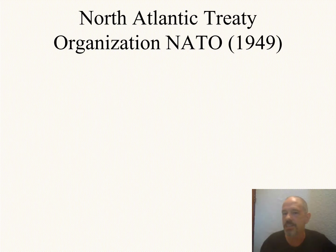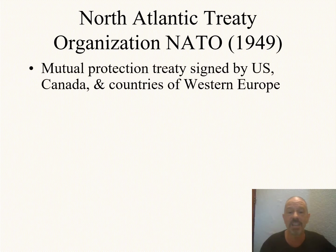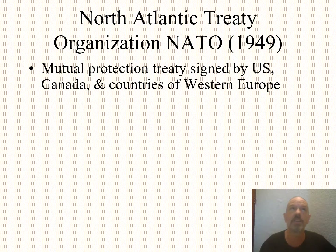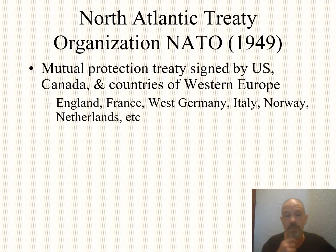It does lead the United States to say, though, that it's going to take more than money. So in 1949, the North Atlantic Treaty Organization — NATO — is formed. A mutual protection treaty signed by the United States and Canada on one side of the North Atlantic and the countries of Western Europe. Sweden, Finland, and Austria are neutral countries and do not join. Spain at that point is still a fascist country and is not a part of NATO.